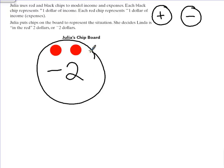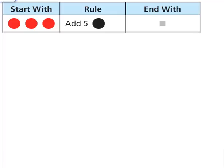Okay, let's look at one more chip model. We're going to start with three red chips. Draw these in your C notes. There's one, two, three negative chips.